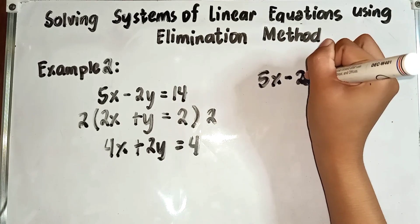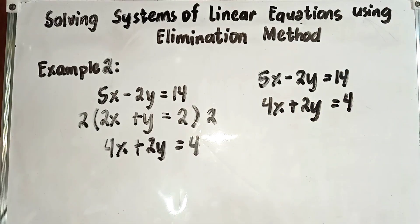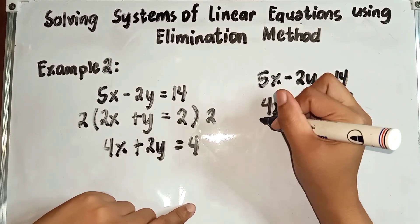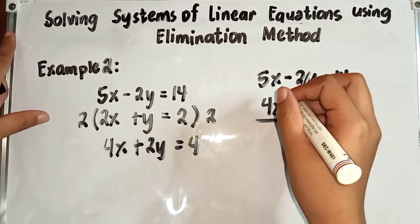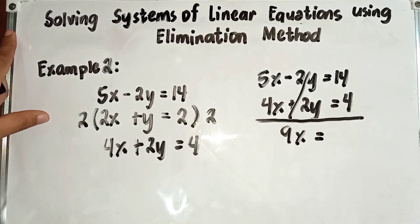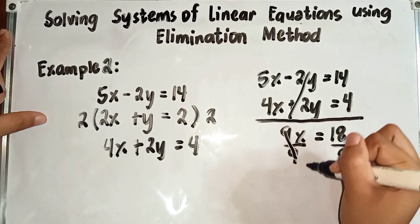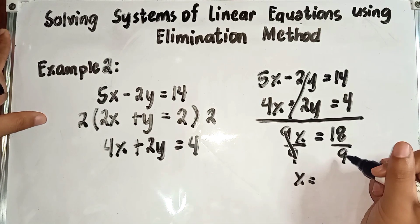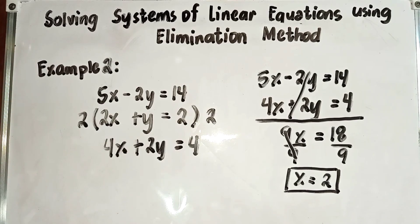We write the system as: 5x minus 2y equals 14, and 4x plus 2y equals 4. We eliminate negative 2y and positive 2y since they are equal in value but have unlike signs. They cancel out. What remains: 5x plus 4x gives 9x, equal to 14 plus 4, which is 18. To find x, divide both sides by 9: x is equal to 18 divided by 9, which is 2.